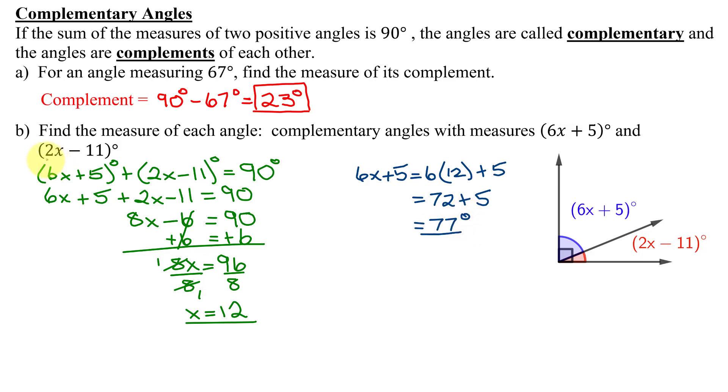And the second angle was 2x minus 11 degrees. So that's 2 times x is 12 minus 11. 2 times 12 is 24 minus 11. 24 minus 11 is 13 degrees. So the angles I'm looking for are 77 degrees and 13 degrees.